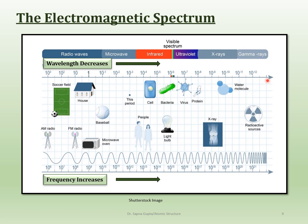Just like you can see a rainbow — without the water you can't see it — it's the same thing here, except this rainbow is kind of invisible. You have all of these radiations. The cosmic radiation gives radio waves, microwaves, the infrared spectrum, a visible region right in the middle, ultraviolet, then x-rays and gamma rays — all of these are in the electromagnetic spectrum.